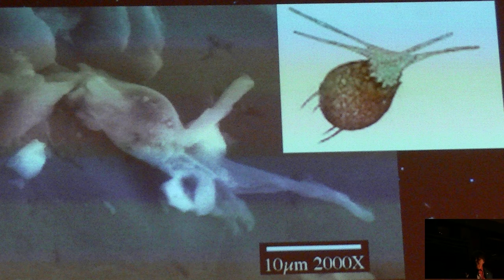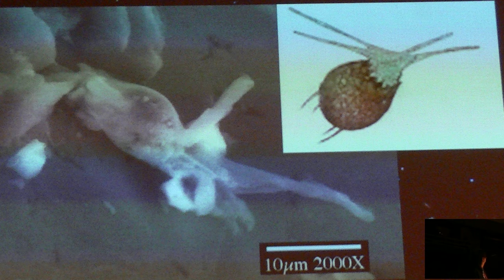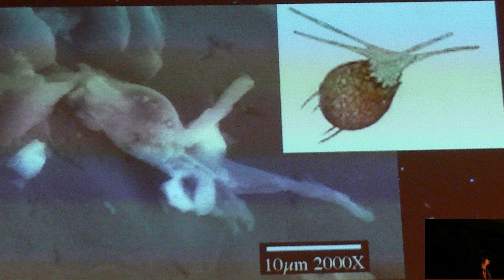Alexei showed this beautiful form in the Efremovka CB3.5 carbonaceous meteorite — possibly something similar to a Sarcina. That's my tentative thinking, and I haven't had a chance to discuss it with Alexei, who may have a much better identification. Whatever it is, I think it is absolutely clear this is not a prokaryote — this is some kind of a eukaryote.